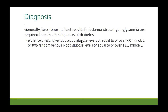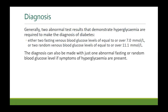Either two fasting blood glucose levels equal to or more than 7 millimoles per liter, or two random venous blood glucose samples of more than 11.1 millimoles per liter. Diagnosis can also be made with just one abnormal reading if symptoms of hyperglycemia are present.